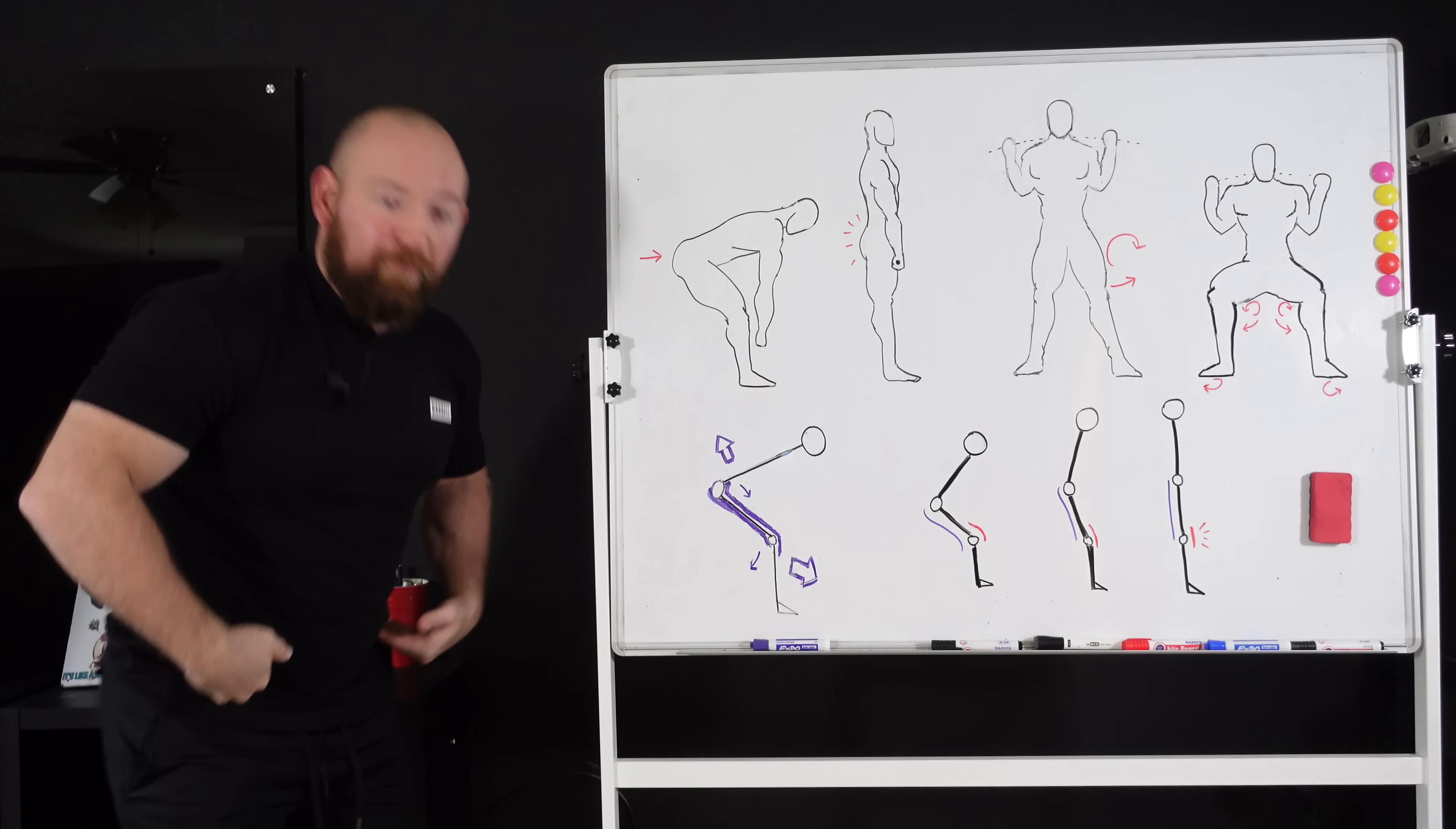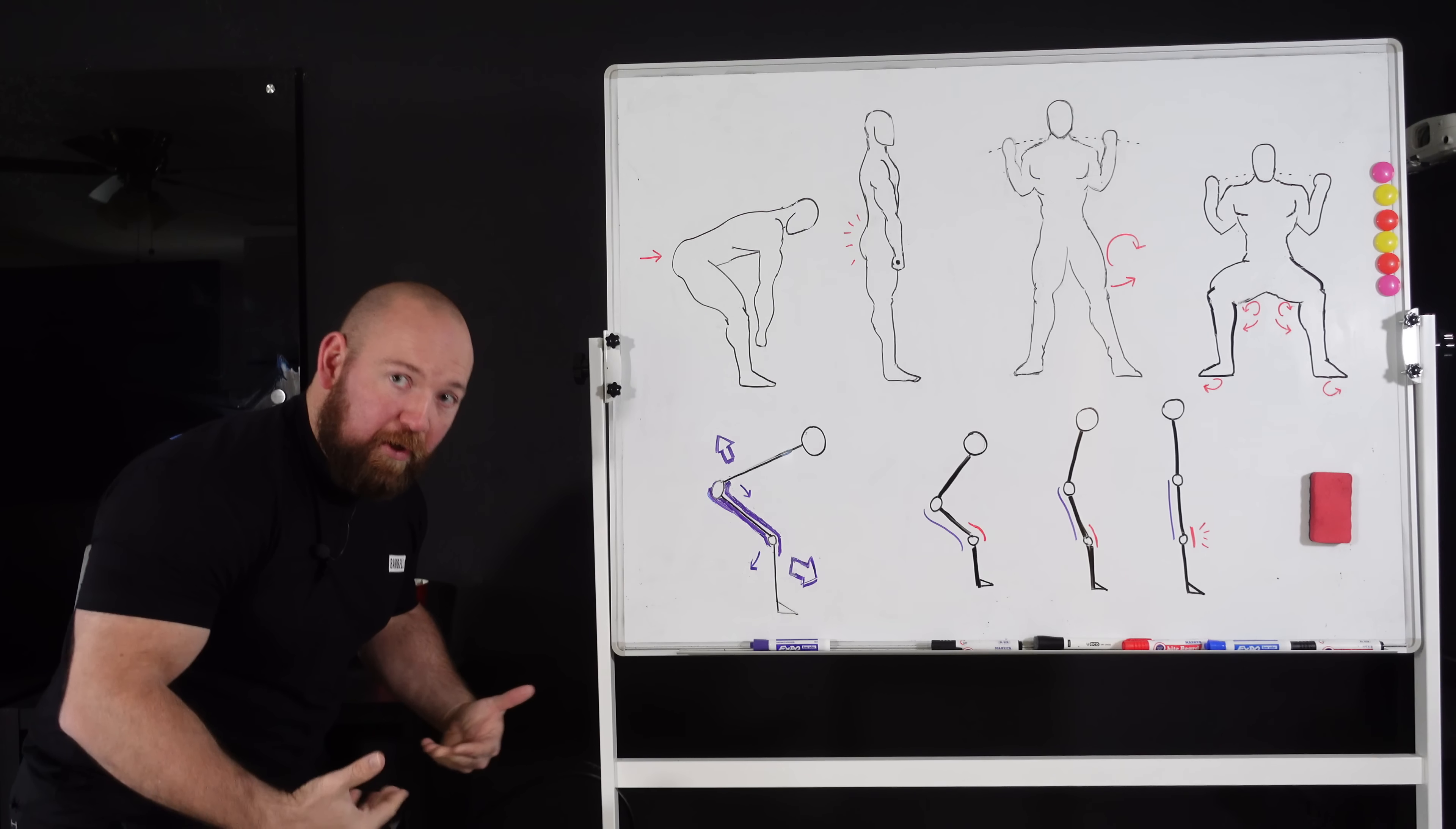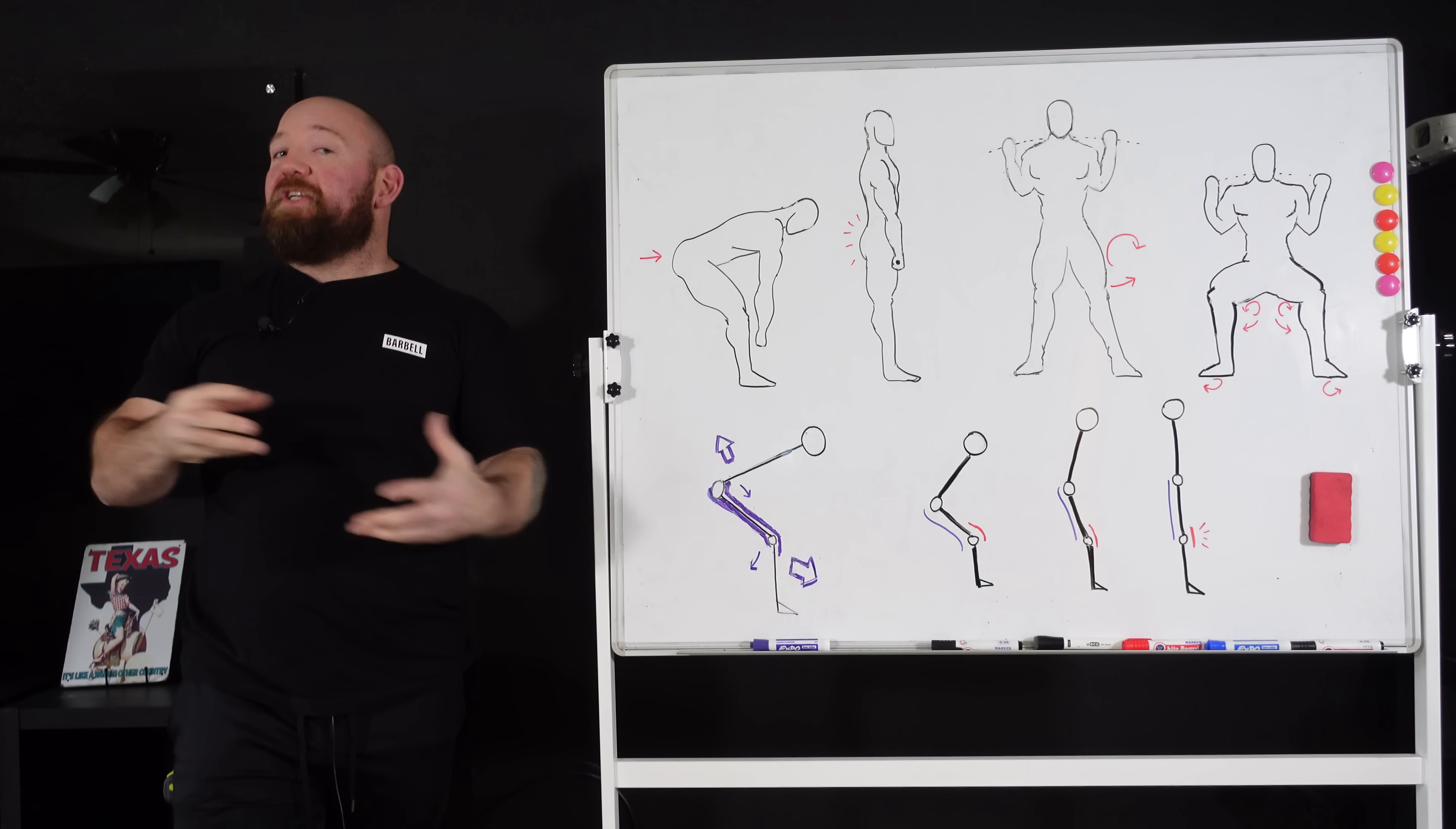As you move into a bent over position, as you flex the hips, you get that stretch through the back of your leg. But if you're in that hip flex position and then you flex your knees, as if you're going down into a squat, you'll notice that your hamstrings become slack. They lose that stretch. They lose that tension.